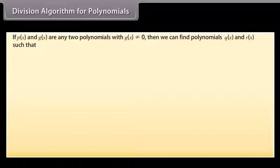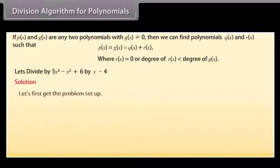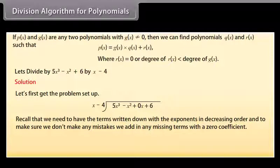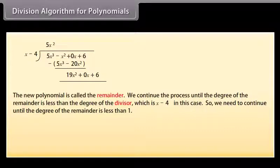Division algorithm for polynomials: If p(x) and g(x) are any two polynomials with g(x) not equal to zero, then we can find polynomials q(x) and r(x) such that p(x) equals g(x) times q(x) plus r(x), where r(x) equals zero or the degree of r(x) is smaller than the degree of g(x). Let's divide 5x cubed minus x squared plus 6 by x minus 4. We need terms written in decreasing order of exponents and add any missing terms with a zero coefficient. We need to multiply x minus 4 to get the first term 5x squared.